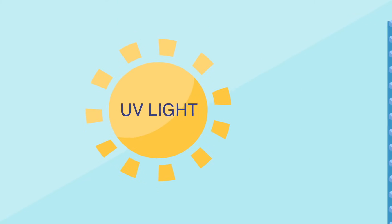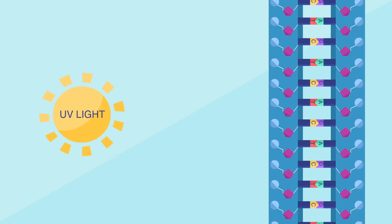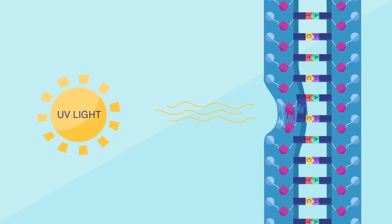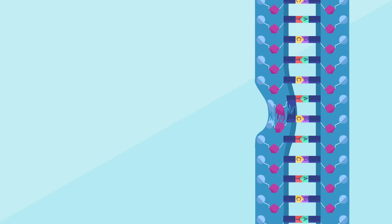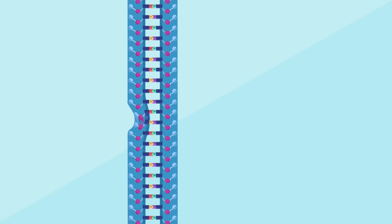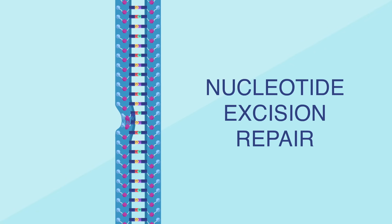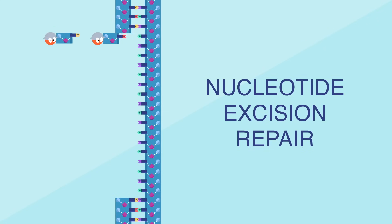UV light can cause damage that's a little harder to fix. Sometimes it causes two adjacent nucleotides to stick together, distorting the DNA's double helix shape. Damage like this requires a more complex process called nucleotide excision repair. A team of proteins removes a long strand of 24 or so nucleotides and replaces them with fresh ones.